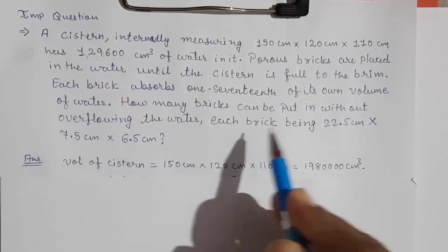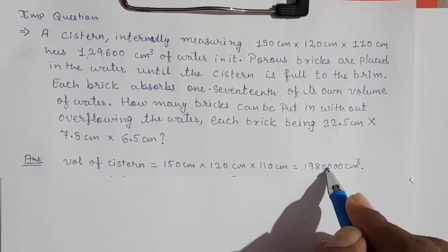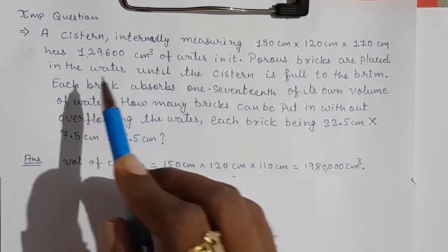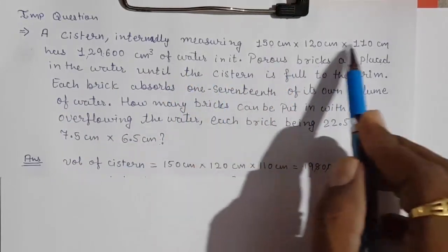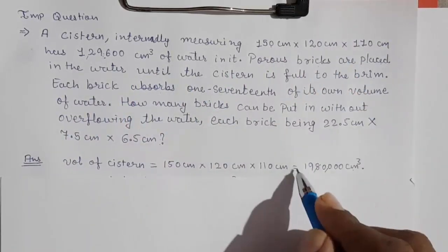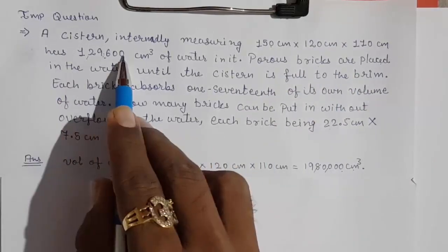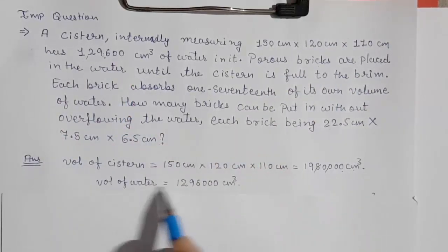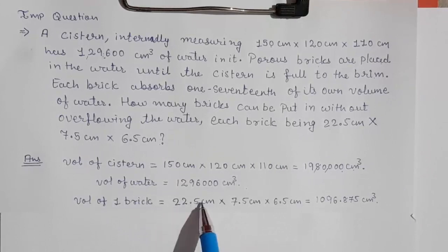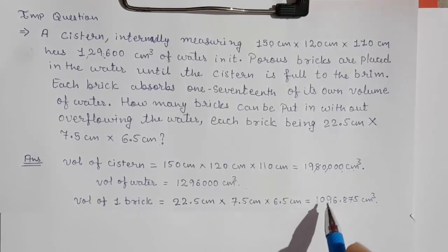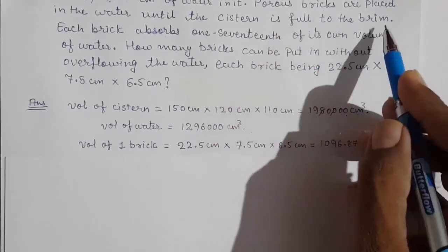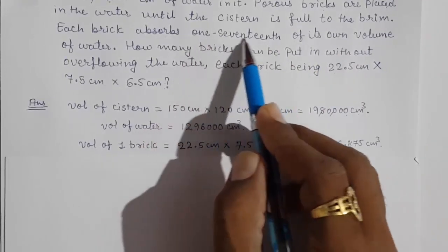First of all, volume of the cistern (tank) = length × breadth × height, which gives us 19,80,000 cm³. Now the volume of one brick = length × breadth × height = 22.5 × 7.5 × 6.5, which gives us 1096.875 cm³. We now have these two values. We also know the volume of water inside the tank: 129,600 cm³.